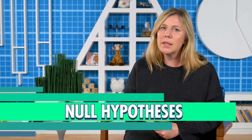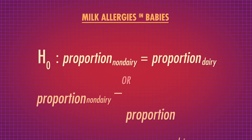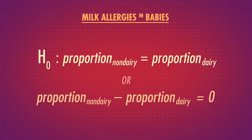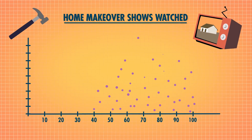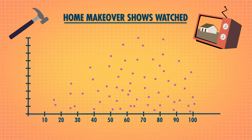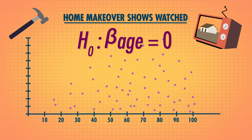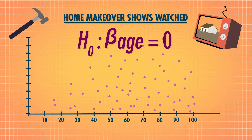In the last episode, we briefly touched on rejecting the null hypothesis. P-values tell us how rare or extreme our sample data would be if it really did come from the null distribution. Null means nothing, so null hypotheses tend to say that there's no effect, or nothing going on. For example, for whether babies who drink non-dairy milk are more likely to have allergies, the null hypothesis would be that there's no difference in the proportion of babies with allergies between the two groups. In the case of home makeover shows, the null hypothesis might be that there's no relationship, so the regression slope, or coefficient, between number of home makeover shows watched and age would be zero.